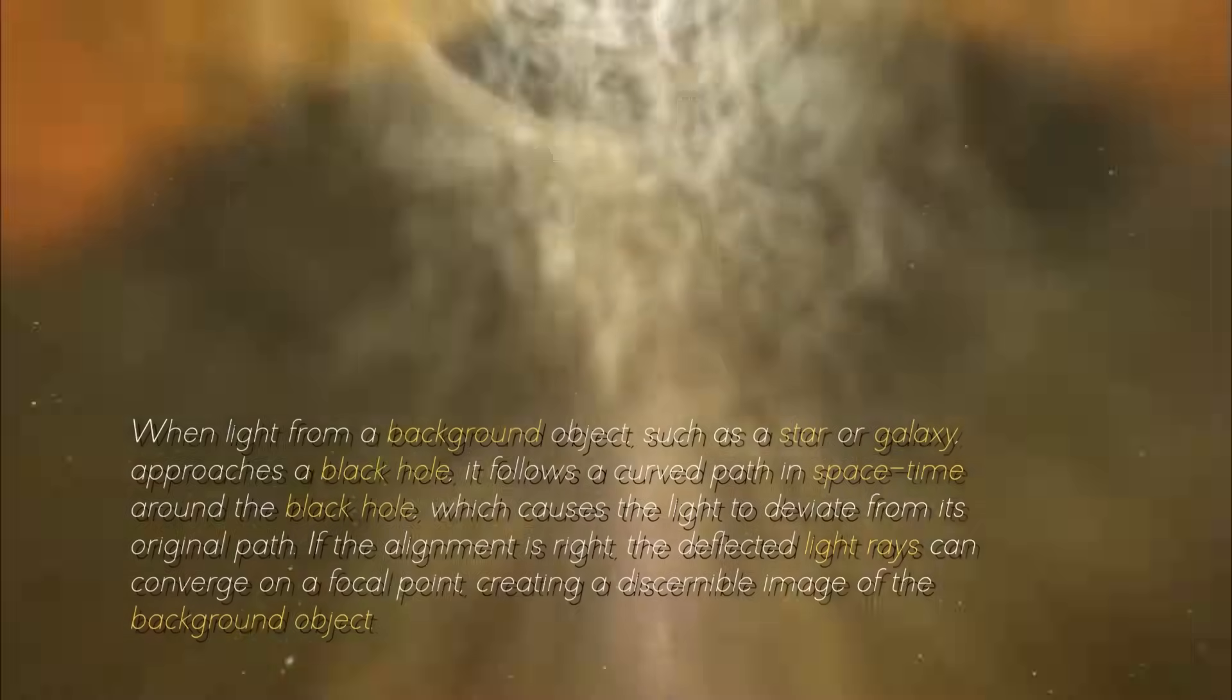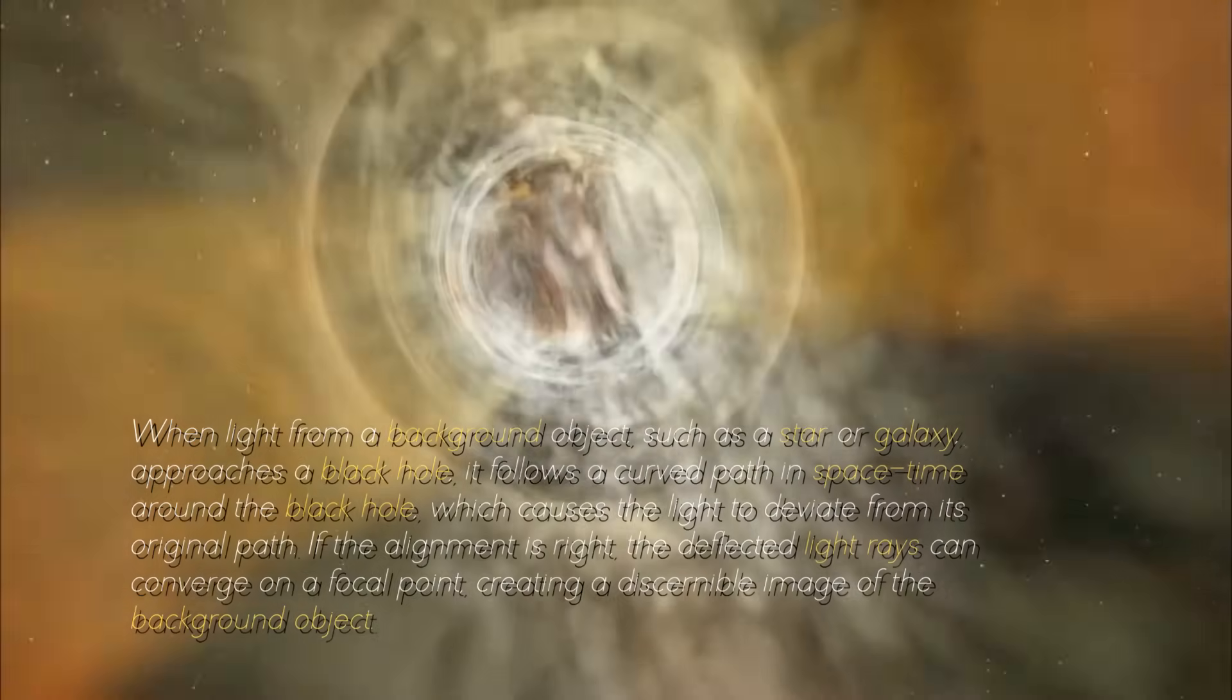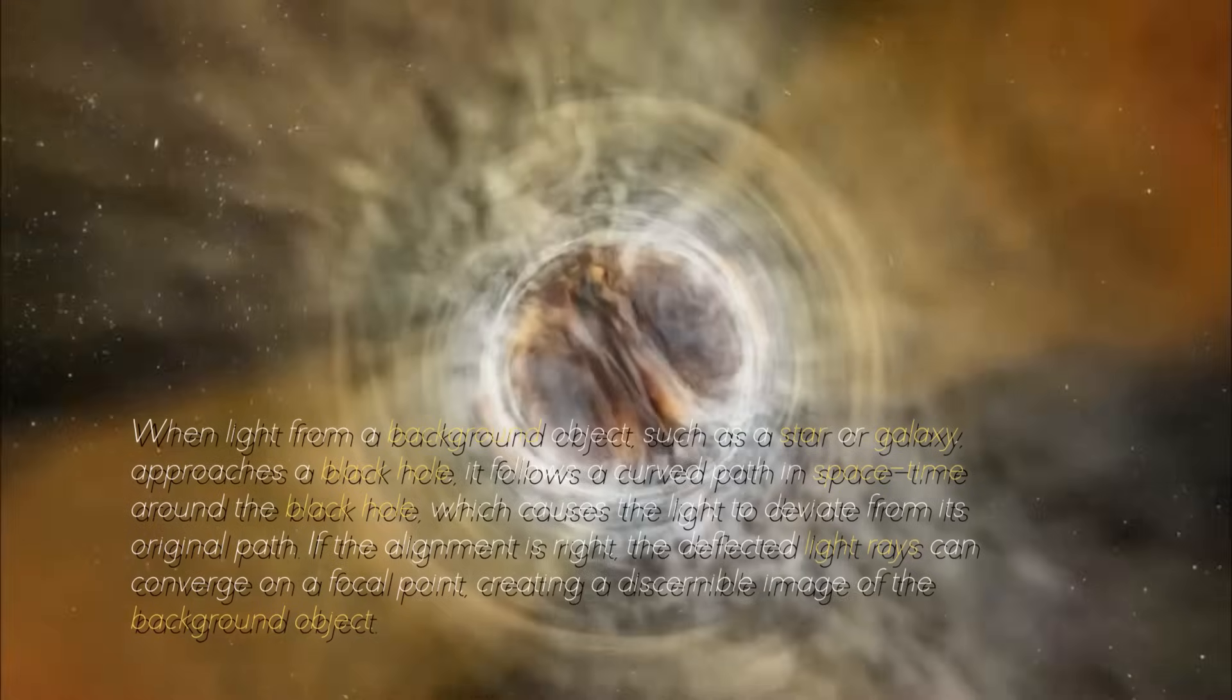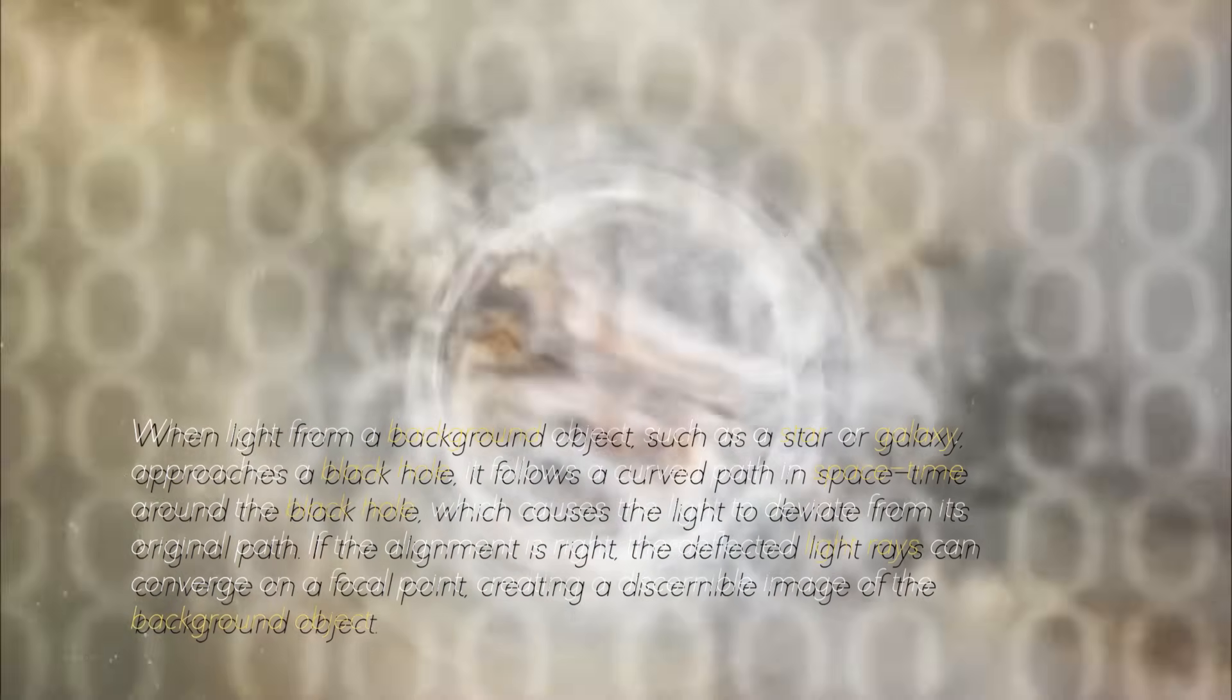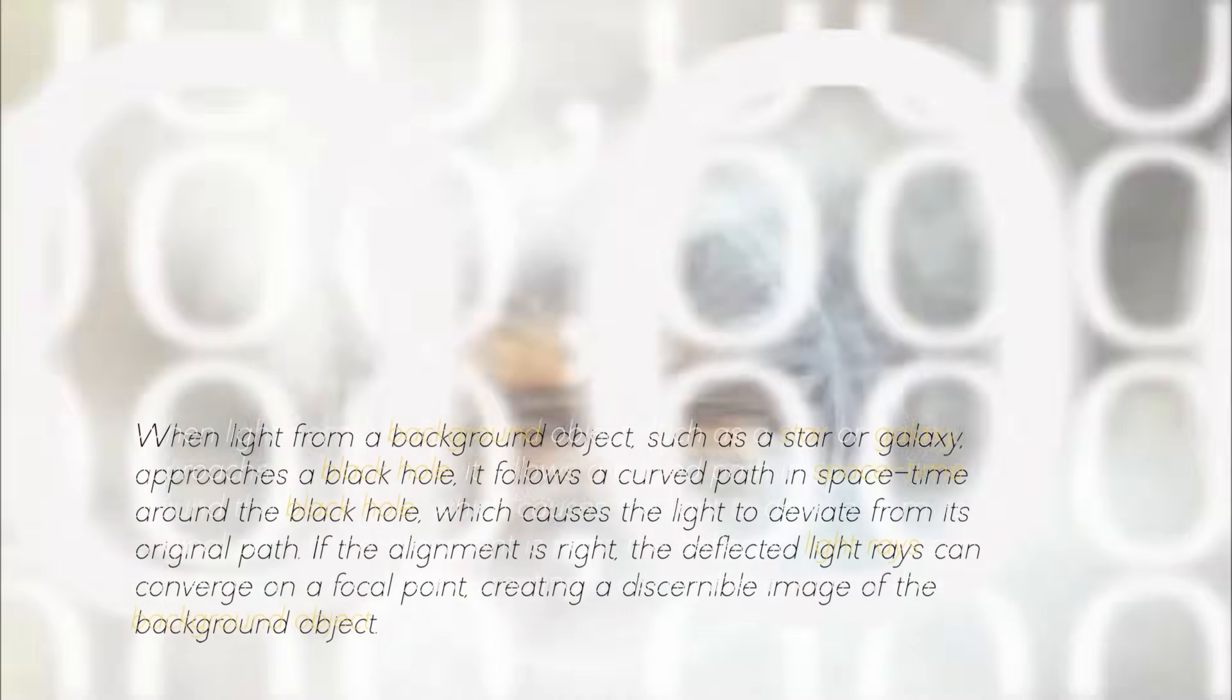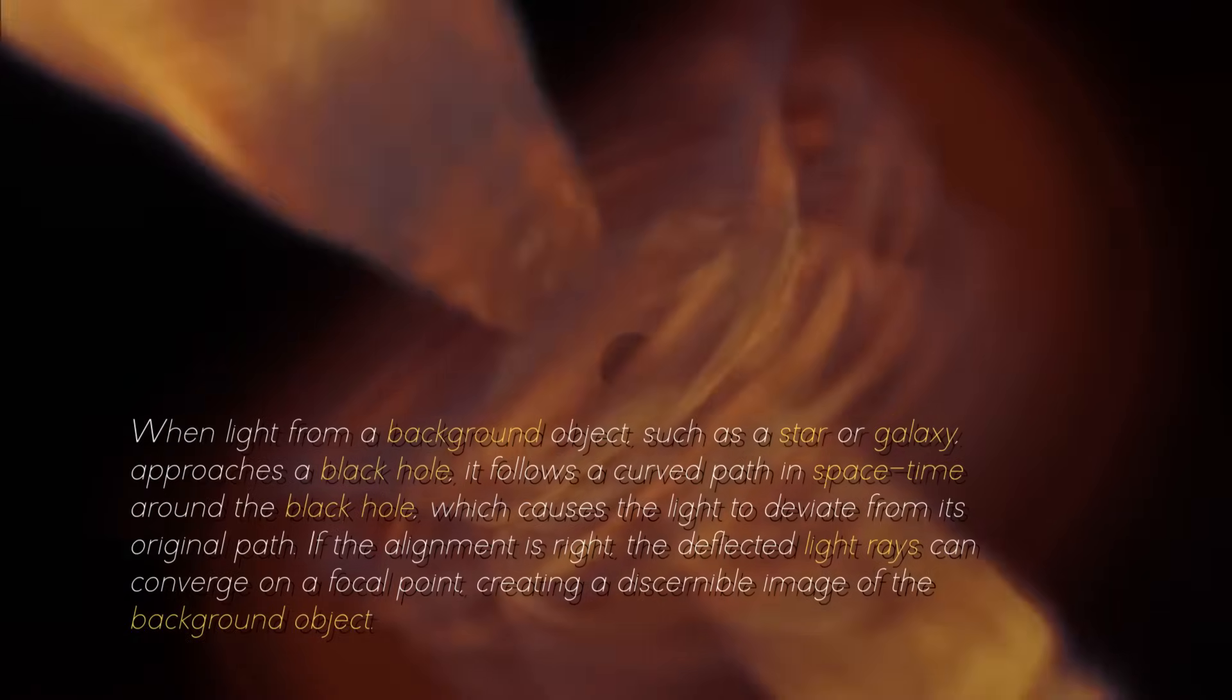When light from a background object, such as a star or a galaxy, approaches a black hole, it follows a curved path in spacetime around the black hole, which causes the light to deviate from its original path. If the alignment is right, the deflected light rays can converge on a focal point, creating a discernible image of the background object.